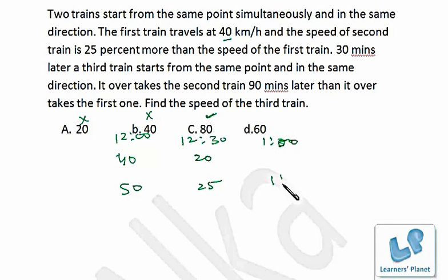that means 1:20. So difference between these two is just 20 minutes, but we want it to be 90. So obviously 80 is also ruled out. We are left with 60 and there is none of these. So we don't have to check 60. 60 speed will be definitely the correct choice. But for convenience, I just explain it.